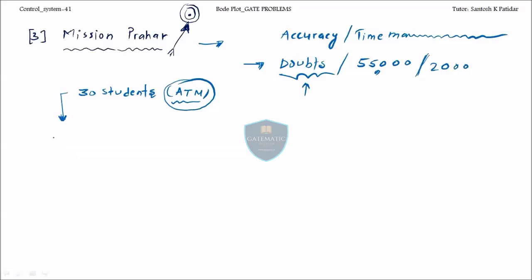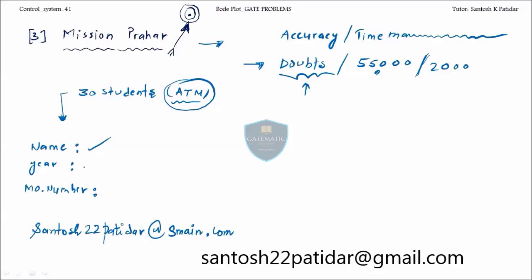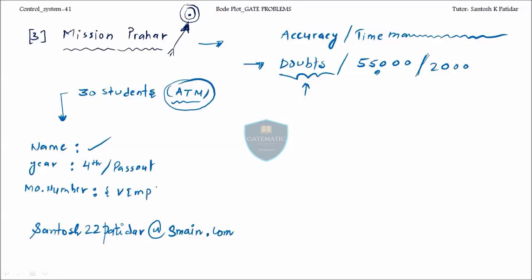But for the very serious students who are really working on the ATM, I am providing something else. What you have to do? You have to send me your name, your year means you are in fourth year or pass out, your phone number, very important thing, your phone number, and you have to send me over this mail ID. This is my personal mail ID you can send.